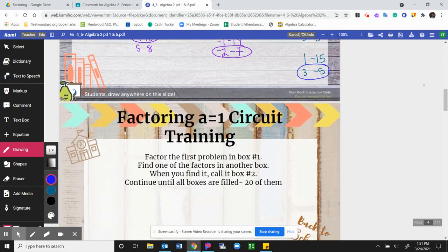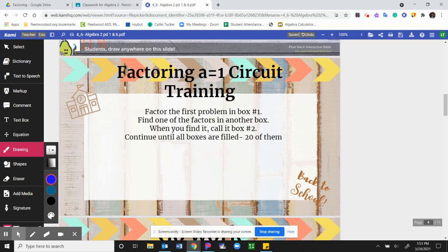So what you guys are working on now is the factoring A equals 1 circuit training worksheet, okay? You need to factor the first problem in box number 1. Find one of the factors in another box, okay? When you find it, make sure you call it box number 2, and then continue with that same process until all the boxes are filled.